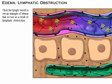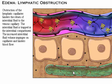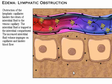Obstruction of the lymphatic capillaries, which can occur with surgical removal of lymph nodes, hinders the return of interstitial fluid to the venous capillary. The interstitial fluid is trapped in the interstitial compartment. This type of edema is significant because the increased interstitial fluid volume impinges on capillaries and hinders blood flow.